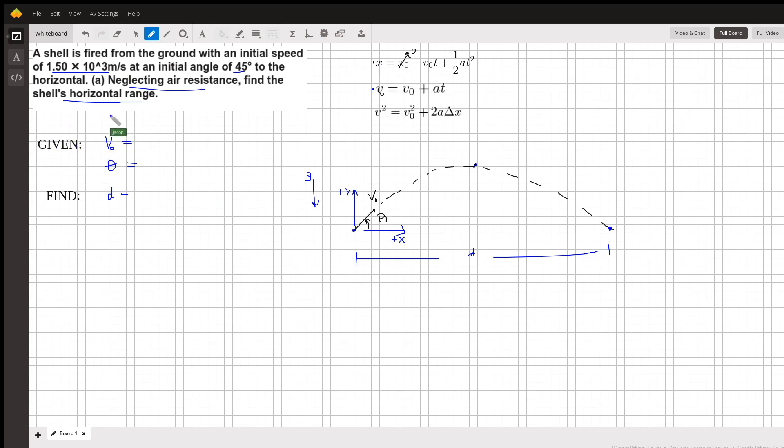So first step is to write out our given values. We have the initial velocity is 1.5 times 10 to the third meters per second, and the initial angle is 45 degrees. Now what do we need to find? We need to find the horizontal range. I just denoted that as D.